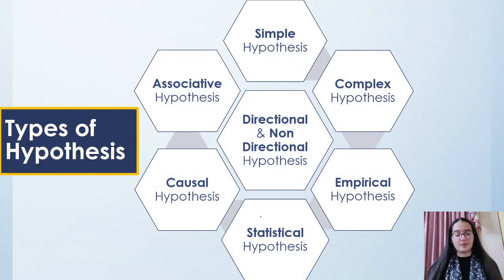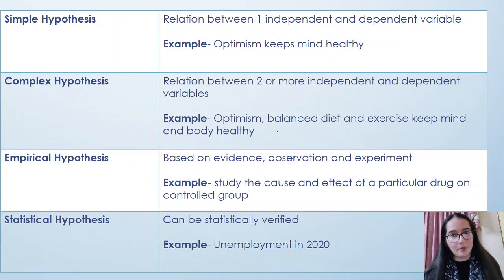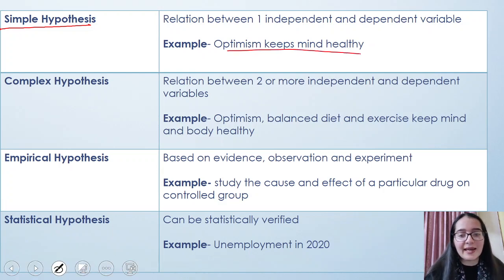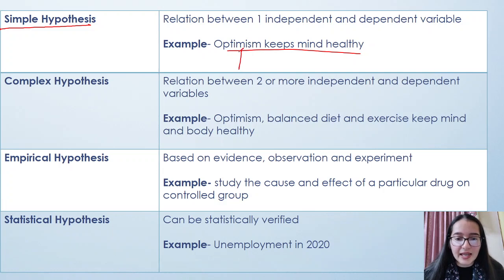This was the importance of why we need to understand the concept of hypothesis. Let's move ahead with the types. We have multiple types: simple hypothesis, complex hypothesis, empirical, statistical, causal, associative, directional, non-directional hypothesis, and many more. Let's understand them one by one. First one is simple hypothesis. Simple means one dependent variable and one independent variable - when their relation is explained, that's our simple hypothesis. Let's take an example: Optimism keeps mind healthy. This is one variable, this is one variable. Optimism is our independent variable, and which variable depends on it? Mind. So there is one independent variable and one dependent variable.